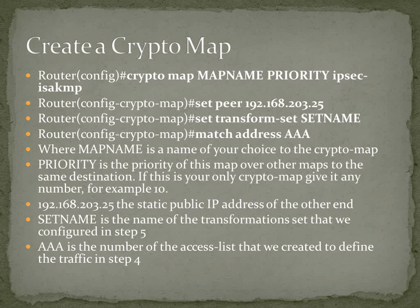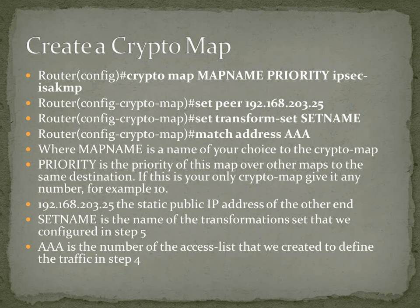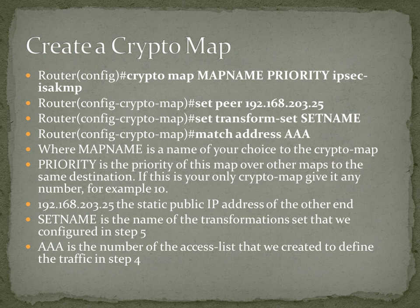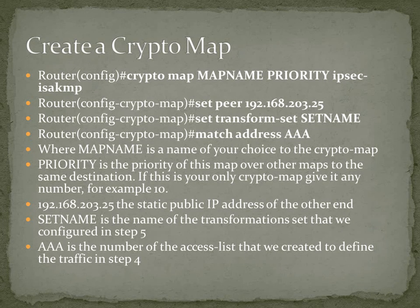Then you want to create your crypto map. Go: crypto map, map name, priority, IPsec isakmp. Set your peer to the external IP address of the person you're connecting to. Set your transform set to the name that you gave it before. Match the address where the map name is the name of your choice. Naming conventions are really handy here. I'm recommending you just use priority 10 — it puts it right in the middle. All of them can be priority 10 because it's basically considered a separate channel. AAA is the number of the access list created in step 4 — you tie it all together at the end.